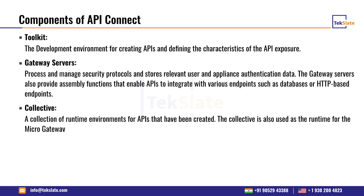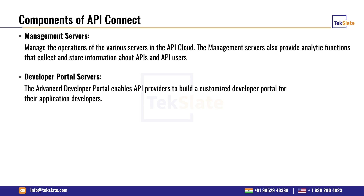Gateway servers (DataPower) and Collectors are the two runtime types. DataPower gateway is where you deploy and run your services with full functionality. Collectors (micro gateway) run on top of the LoopBack framework — you can deploy APIs there too, but with limited functionality compared to the DataPower gateway.